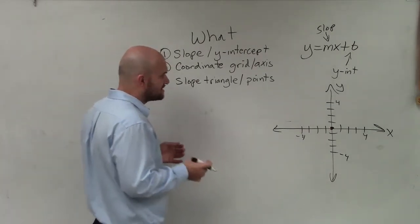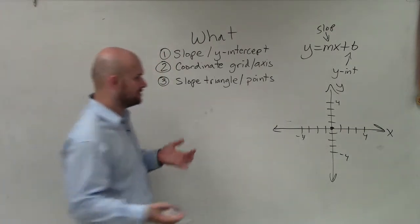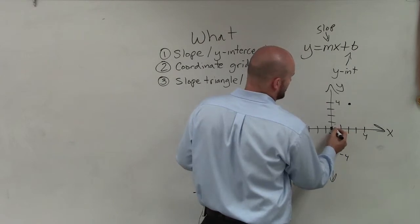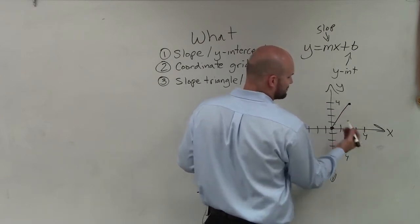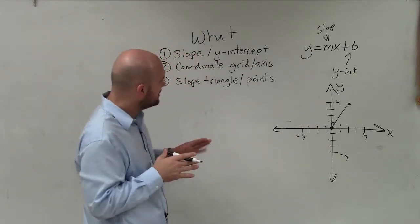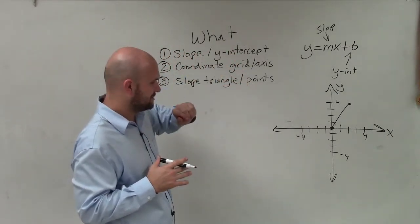When we have two points, remember the slope represents a ratio. Let's say our two points are over here. When we're connecting a line, what the slope triangle allows us to do... actually, let's get to our y-intercept first.